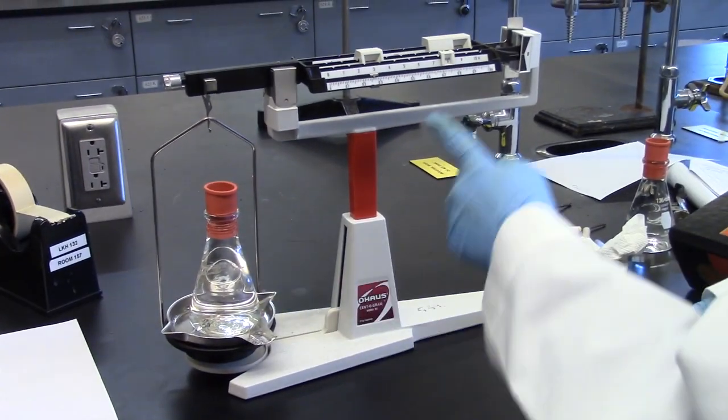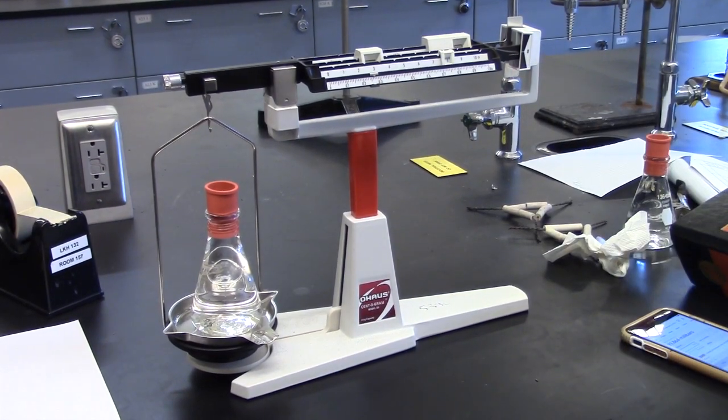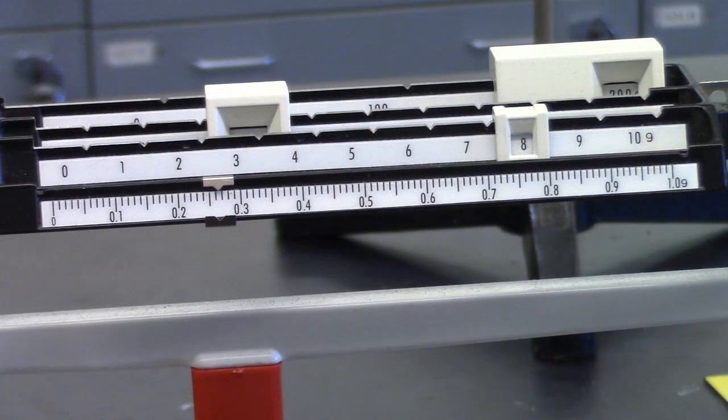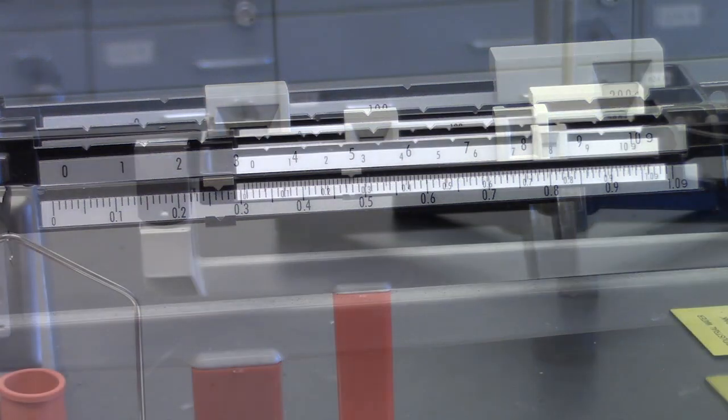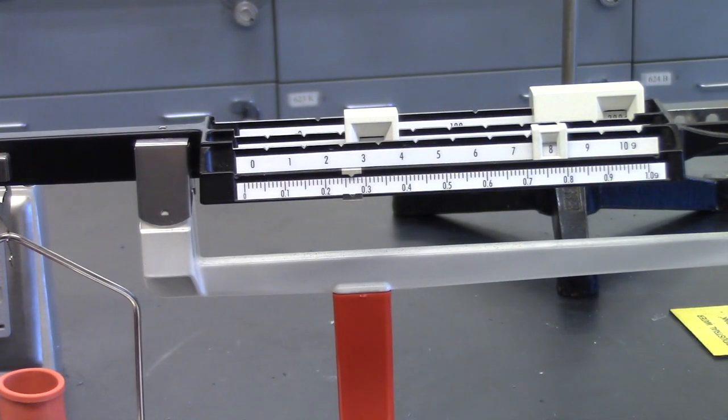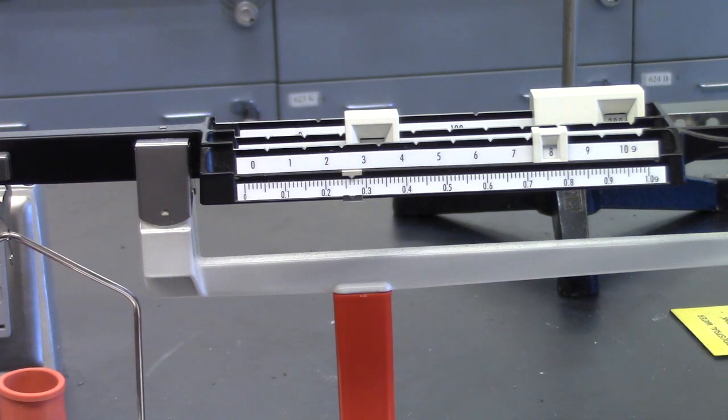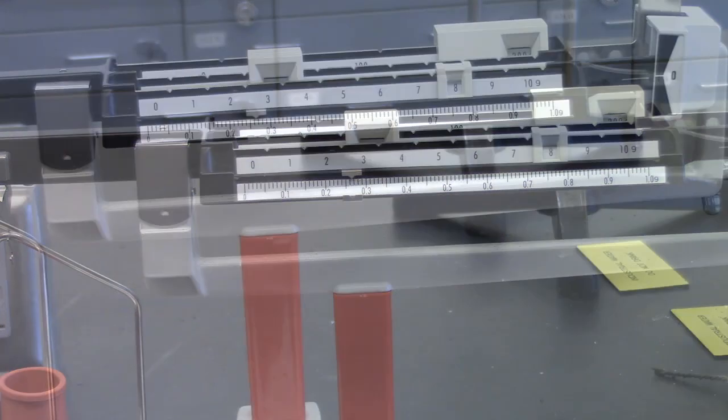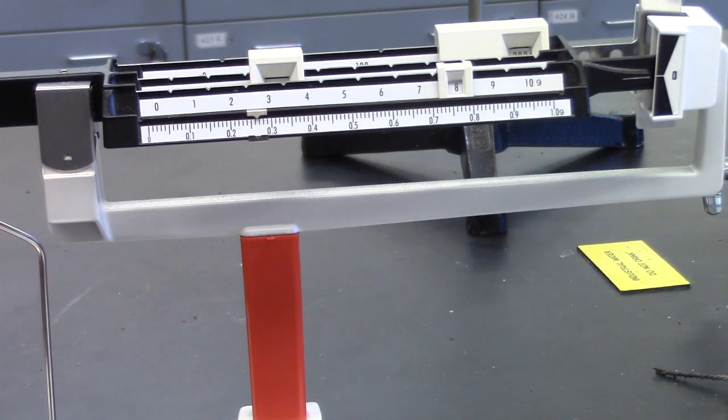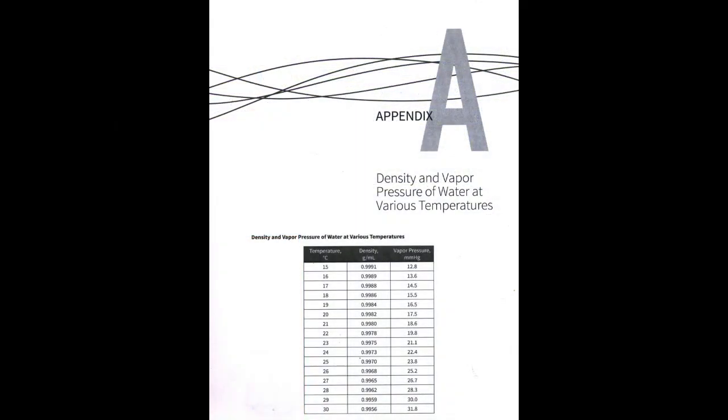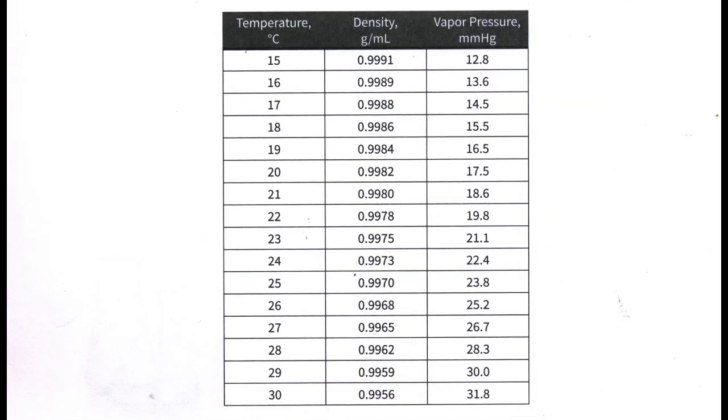Weigh the flask, septum, and water on a properly zeroed triple beam balance. For example, this weighs 238.26 grams. You cannot use an analytical balance for this step because the mass will exceed the capacity of the balance and may damage it. Record the mass of the apparatus plus water and the temperature of the water in your notebook. Find the density of water at this temperature from Appendix A in the back of the lab manual and calculate the volume the flask holds.